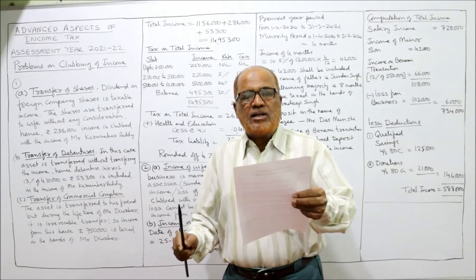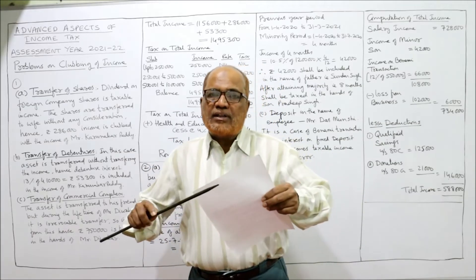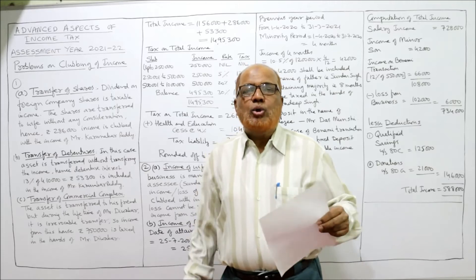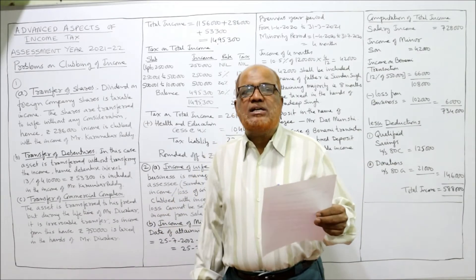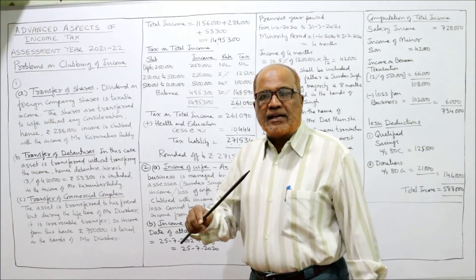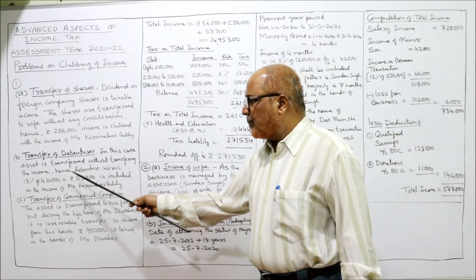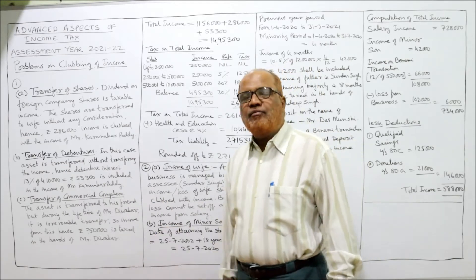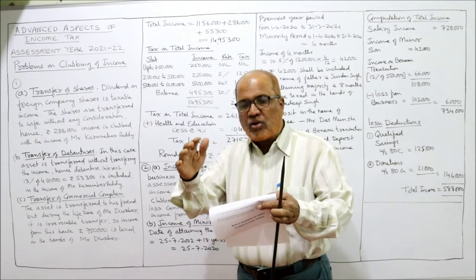Karunakar Reddy transferred the debentures to his friend Mr. Javed on the condition that during Karunakar Reddy's lifetime, he will enjoy the interest on those debentures, and only after his death will Javed enjoy the income. Income Tax Act says that throughout the life of the person enjoying the benefit — the transferor Karunakar Reddy — whatever income is generated on these debentures is taxable in the hands of Karunakar Reddy. In this case the asset is transferred without transferring the income, hence debenture interest at 13% of ₹4,10,000 = ₹53,300 is included in the income of Mr. Karunakar Reddy.